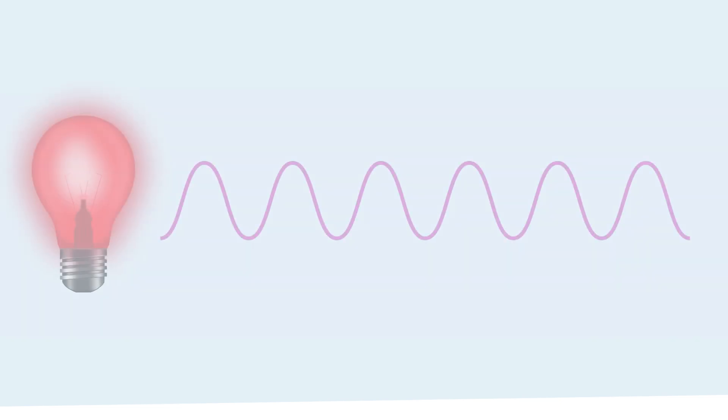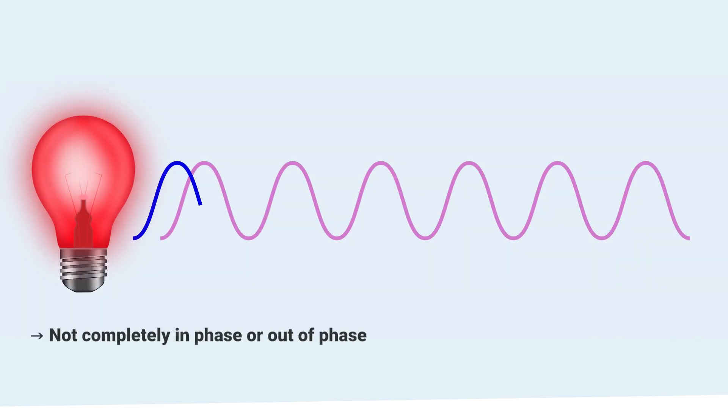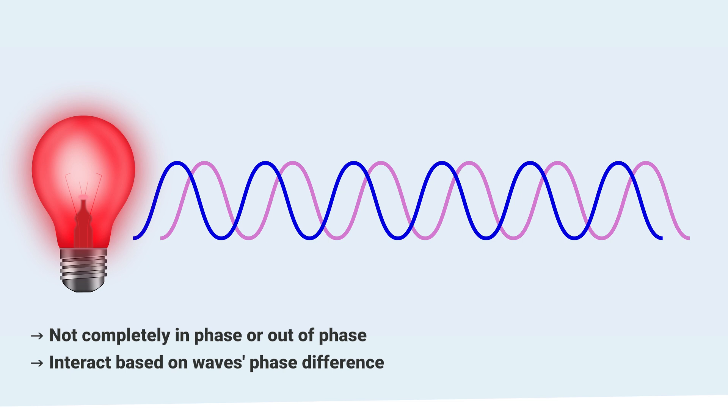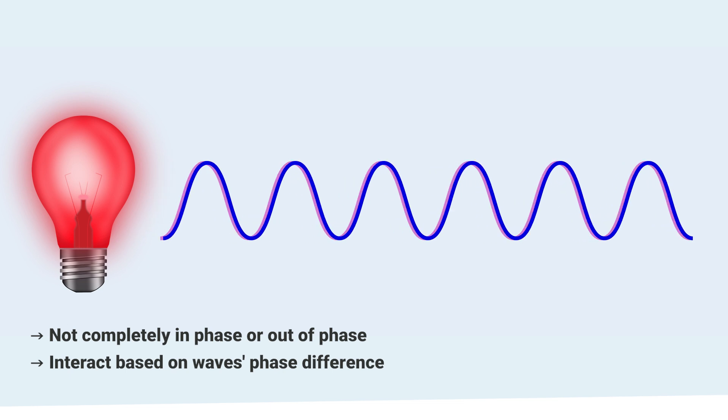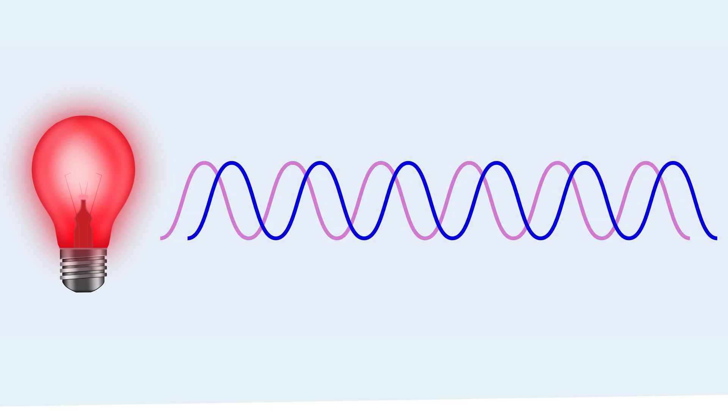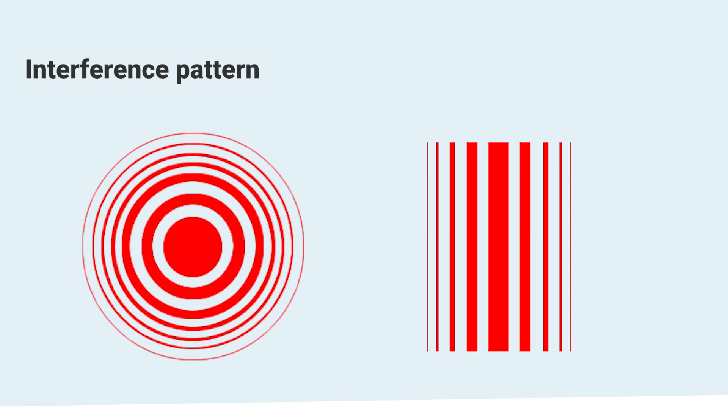Waves that are not completely in phase or out of phase can also interact in a way that depends on the phase difference between the two waves. The specific way the waves interfere is called an interference pattern.